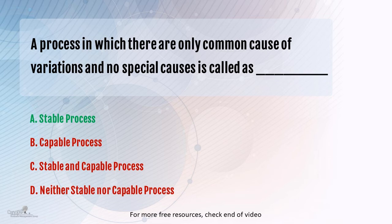So the answer to this question is: a process in which we have only common cause of variation and no special cause or assignable cause is called as a stable process.